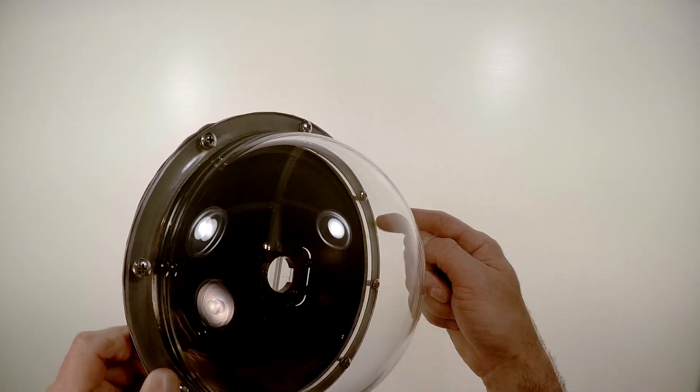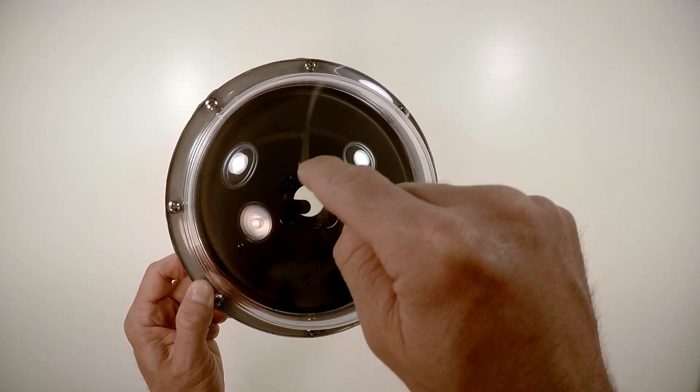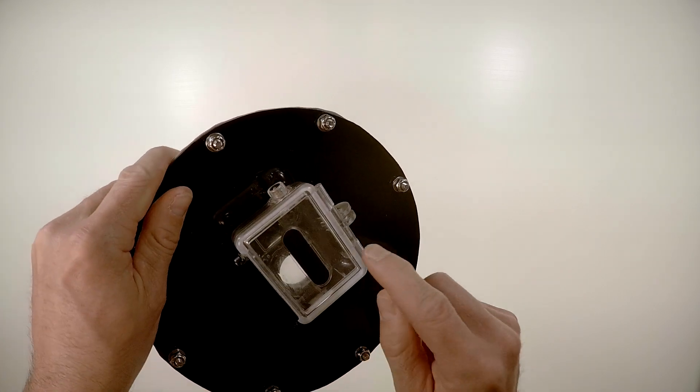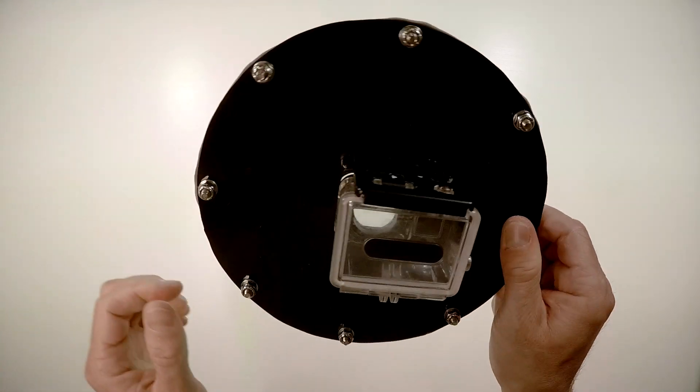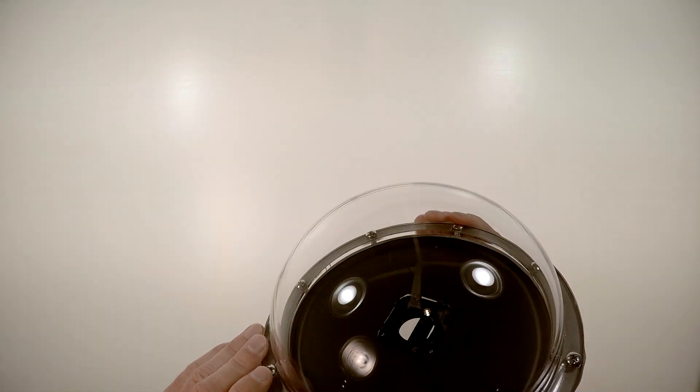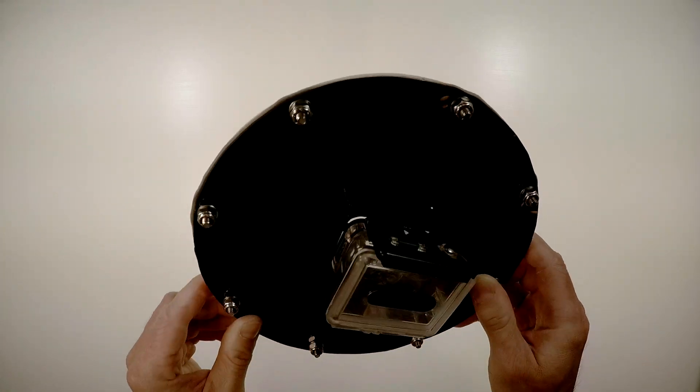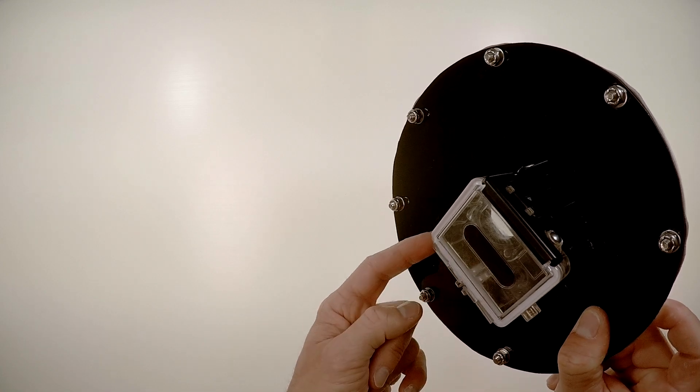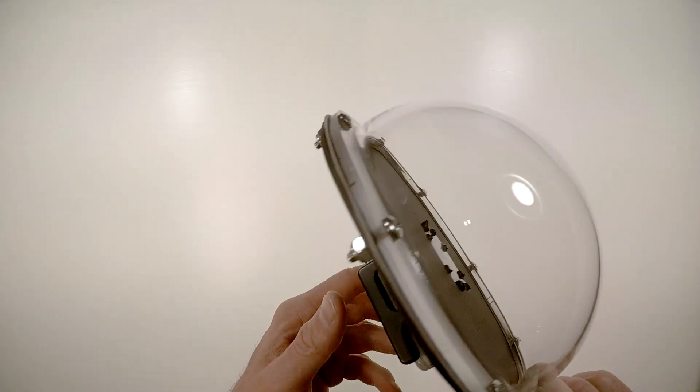Obviously make sure that the enclosure stays dry. And also when you're using it, just check it periodically. Make sure no water is getting in there. You can kind of tilt the enclosure, the housing, and see if water runs to a corner or not.